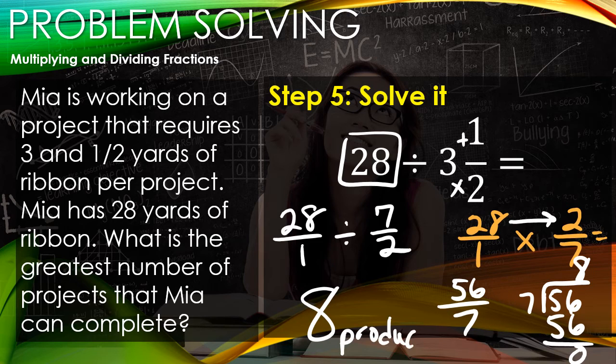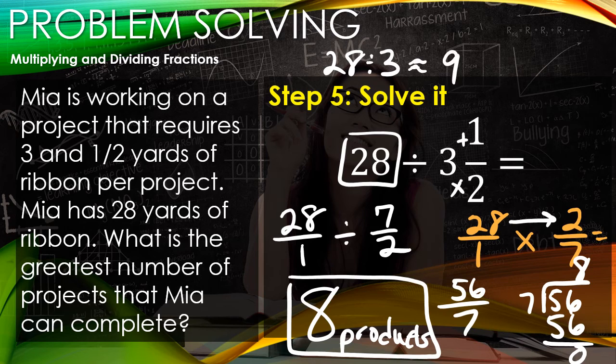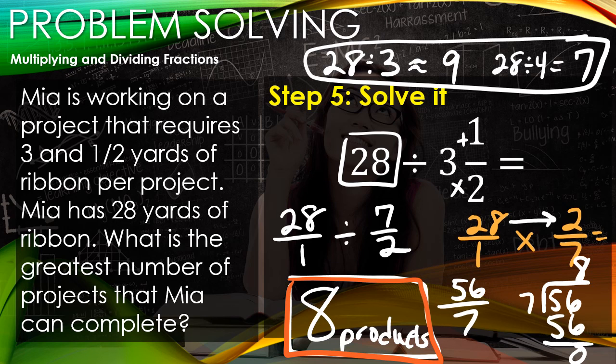To double-check: if we round 3 and 1/2 down to 3, 28 divided by 3 gives us a little over 9. If we round it up to 4, 28 divided by 4 gives us 7. So our number has to be somewhere between 7 and 9, and you guessed it...